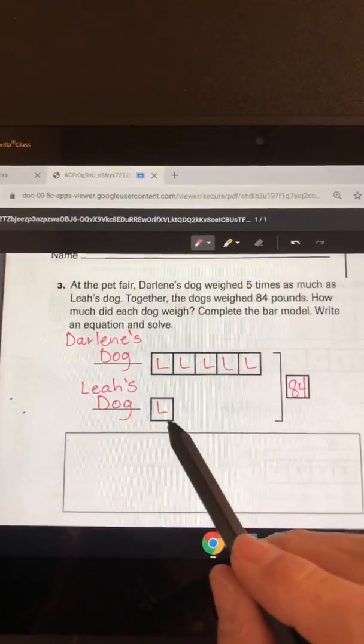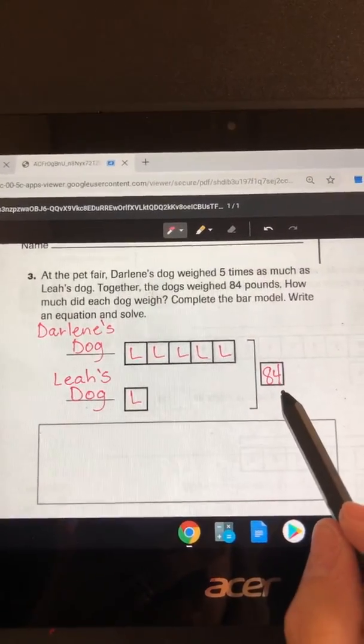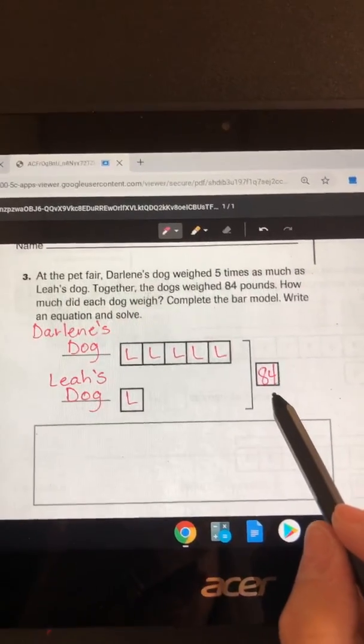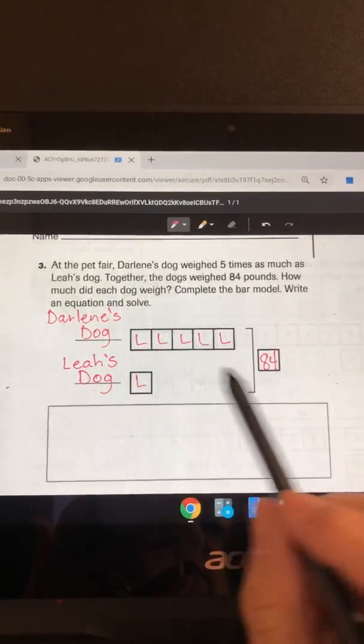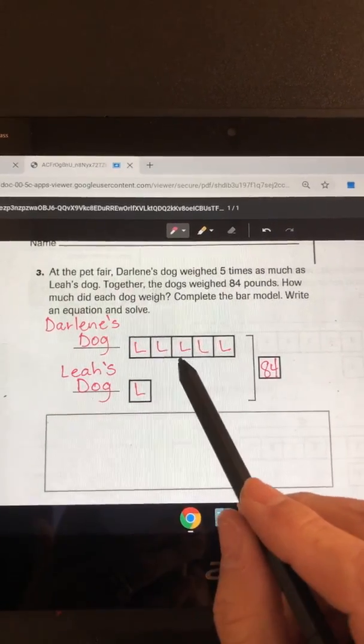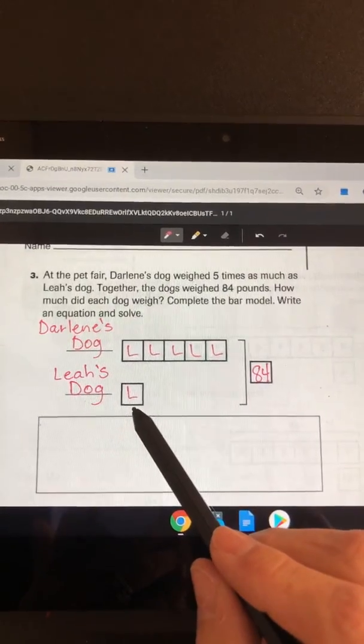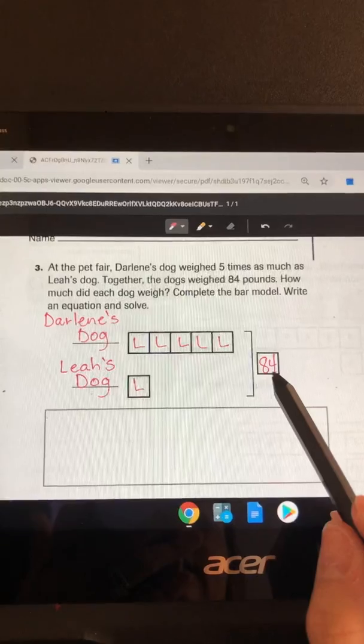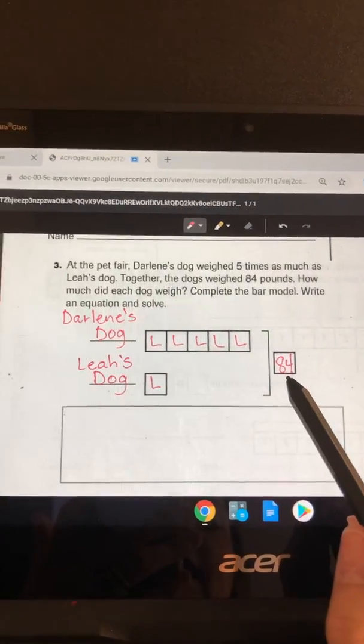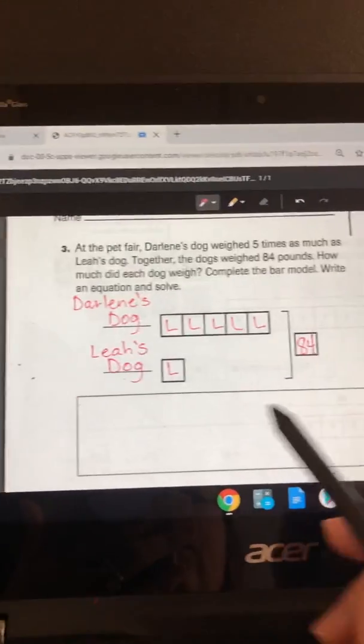So where you start with bar models, you say okay, I've got one, two, three, four, five, six squares here, and together they equal 84. So I'm gonna start by writing down some equations here.